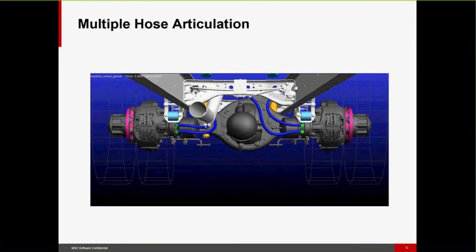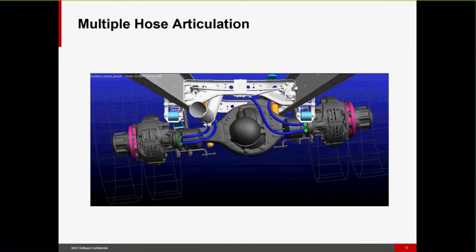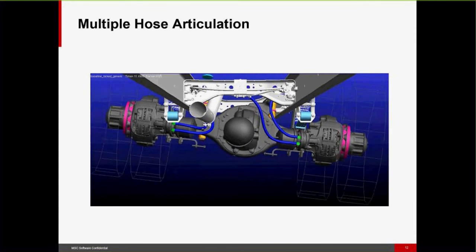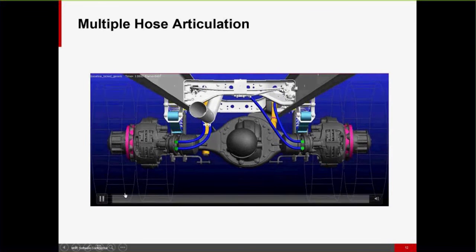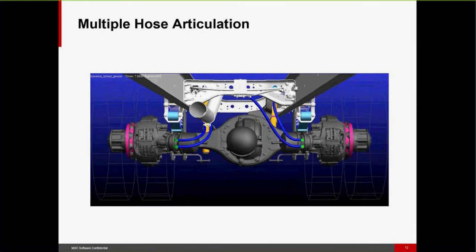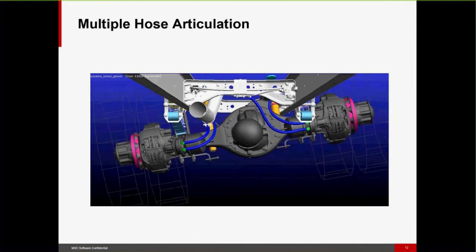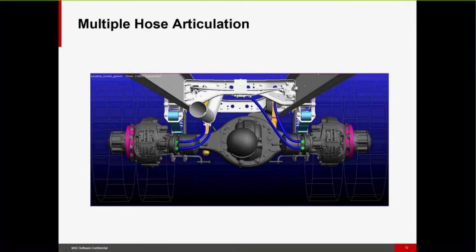Here's another brake hose application on a commercial vehicle rear axle, undergoing both in-phase and out-of-phase jounce displacements. It's very important to understand what's happening with these hoses — are they long enough, will they be over-stretched, will they rub on anything? Geometric nonlinearity makes this a perfect application for the FE part element.